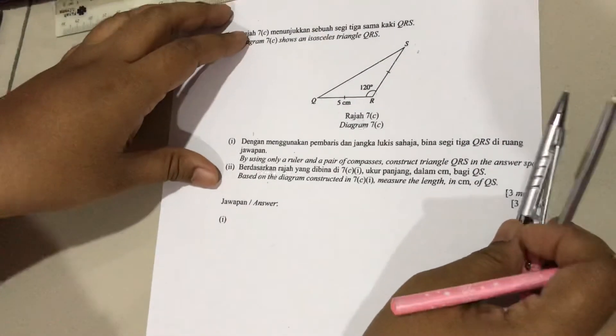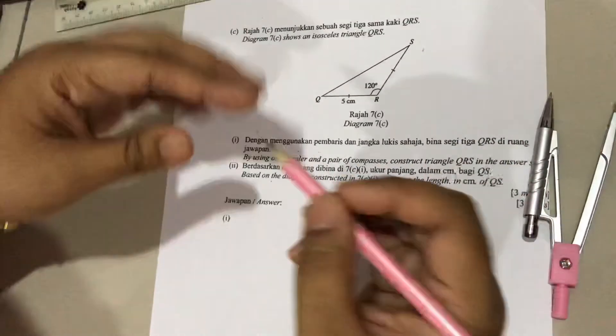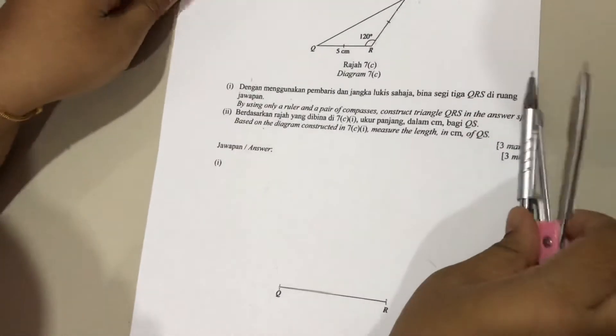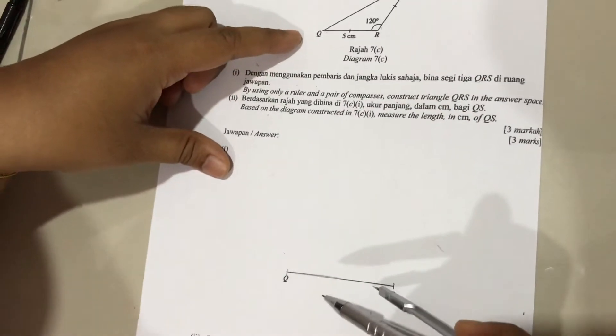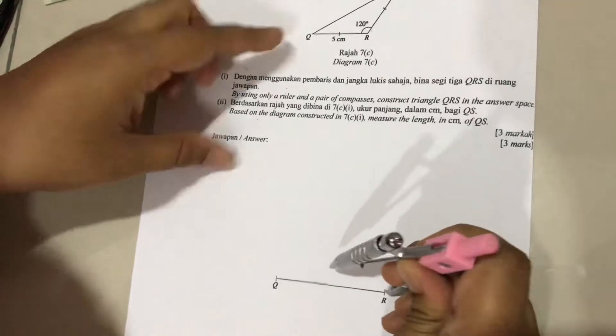To construct, you must use a ruler, compasses, and pencil. So you construct the answer here. Angle R is 120 degrees, now we draw 120.